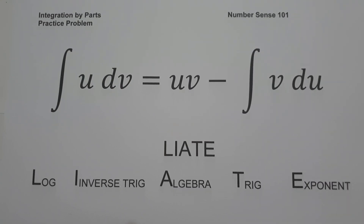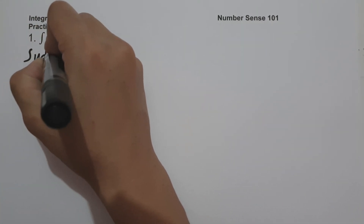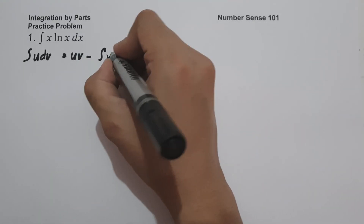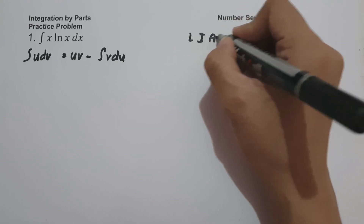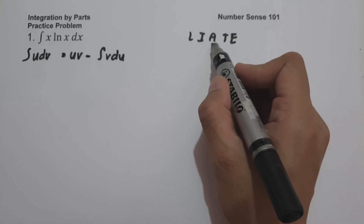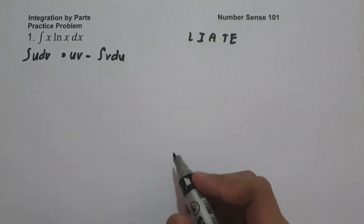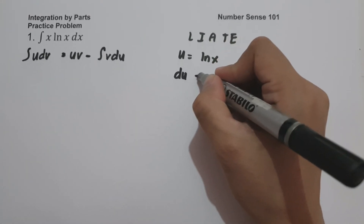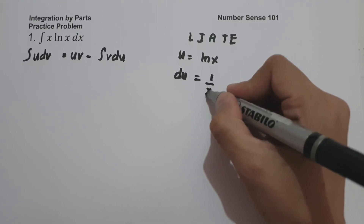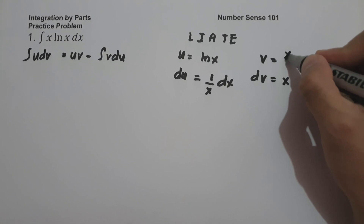For example 1, what is the antiderivative of x·ln(x) dx? Using the formula and the LIATE acronym: x is algebra and ln(x) is logarithm. Since logarithm comes before algebra in LIATE, the value of U is ln(x), and du is the derivative of ln(x), which is 1/x dx. Then dv is x dx, and v is x²/2.